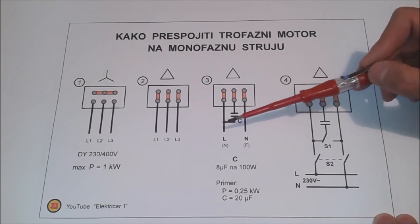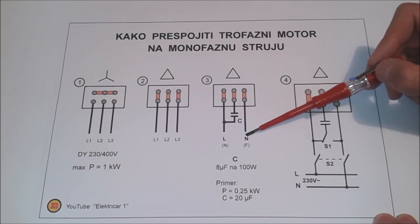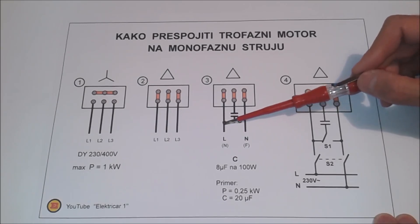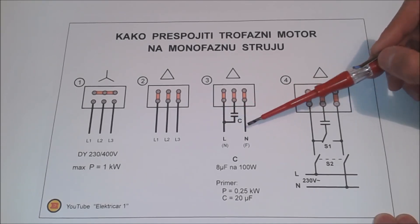They will be supplied with phase and neutral conductor. It doesn't matter where we bring the phase or neutral conductor. When we tie the capacitor to the end, we will have rotation in one direction and if we tie to another end, we will have rotation in the opposite direction.